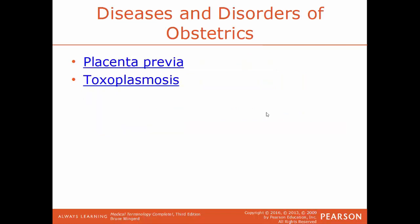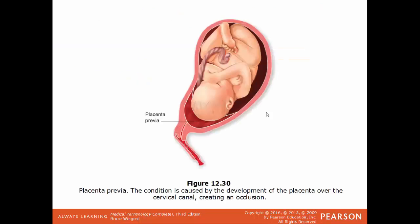Placenta previa occurs where the baby's placenta either partially or totally blocks off the mother's cervix. Toxoplasmosis is a disease caused by a common parasite found in undercooked meat, soil, or cat feces. This infection typically isn't a big deal to adults, but it can be very dangerous to an unborn baby — this is why pregnant women should not handle cat feces or be near a litter box. In this image, we have an example of placenta previa, where the placenta is blocking or occluding the cervix — as it gets larger, blood flow is cut off.